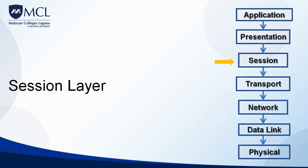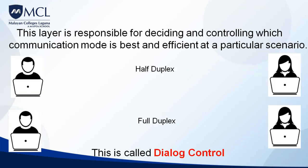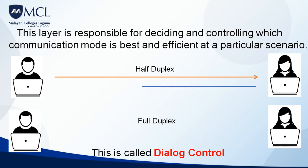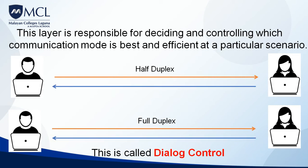Let's proceed to the third OSI layer, which is the session layer. The session layer is responsible for deciding and controlling which communication mode is best and most efficient in a particular scenario — for example, whether half-duplex or full-duplex is better at a given internet speed. This is called dialogue control, because it controls how the two users communicate.